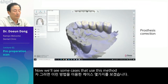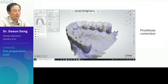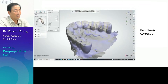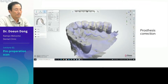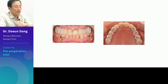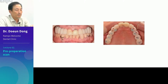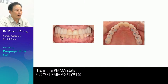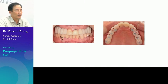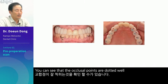Now we'll see some cases that use this method. This prosthesis is reenacted and placed in the oral cavity — this is in a PMMA state. You can see that the occlusal points are dotted well.